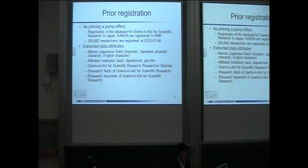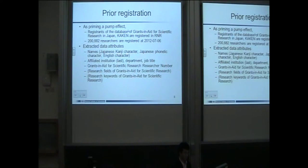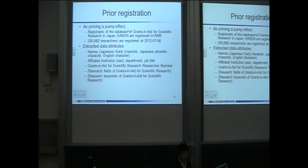We register researchers preliminarily. Researchers registered in the grant database are registered in our system. We now have 200,000 researchers registered.